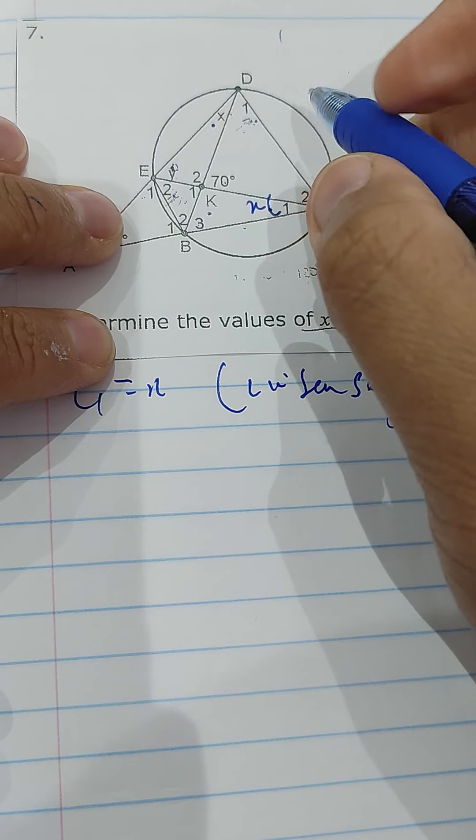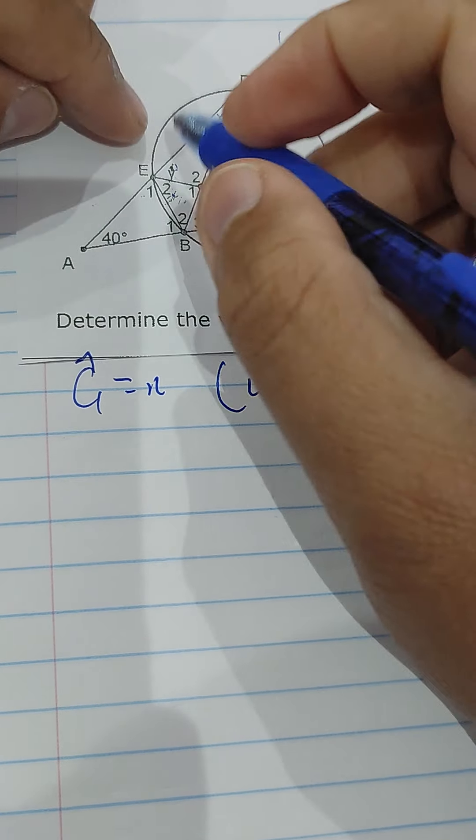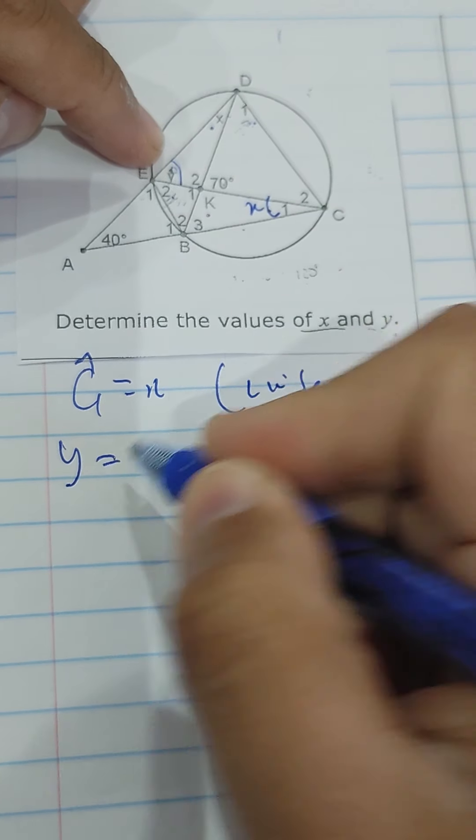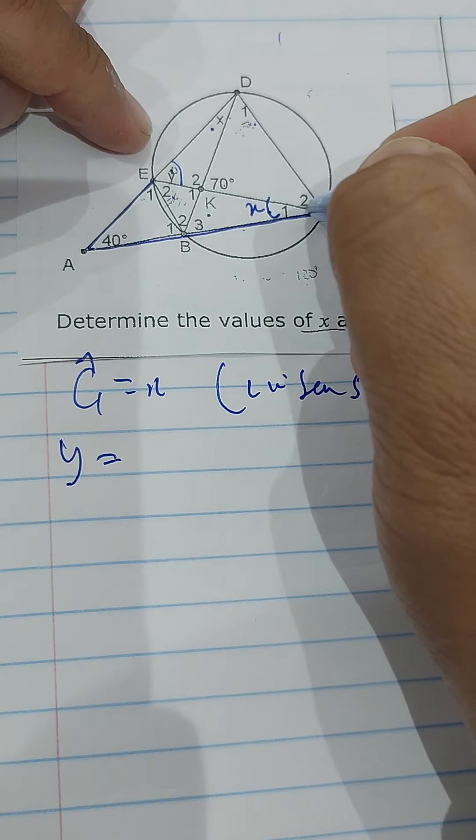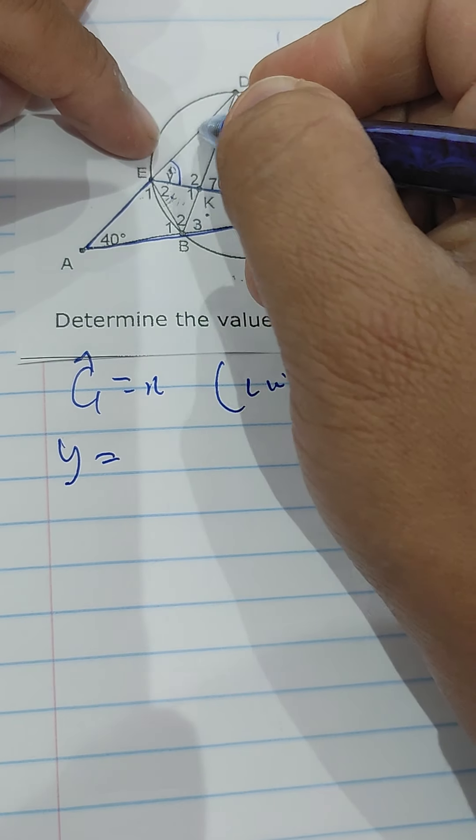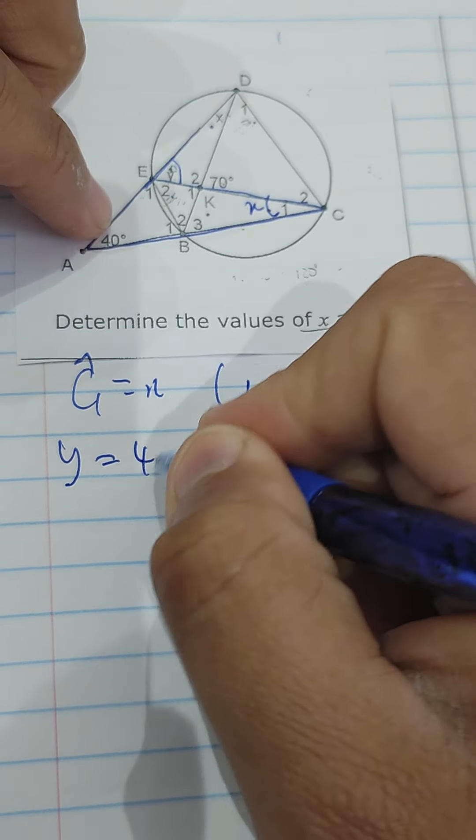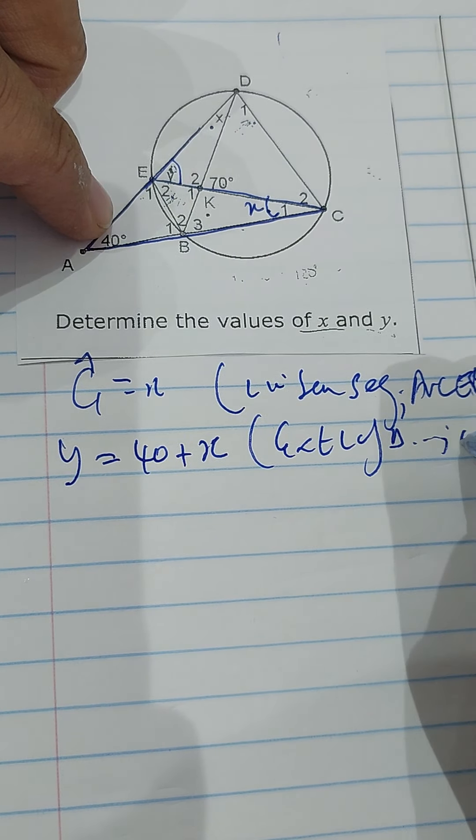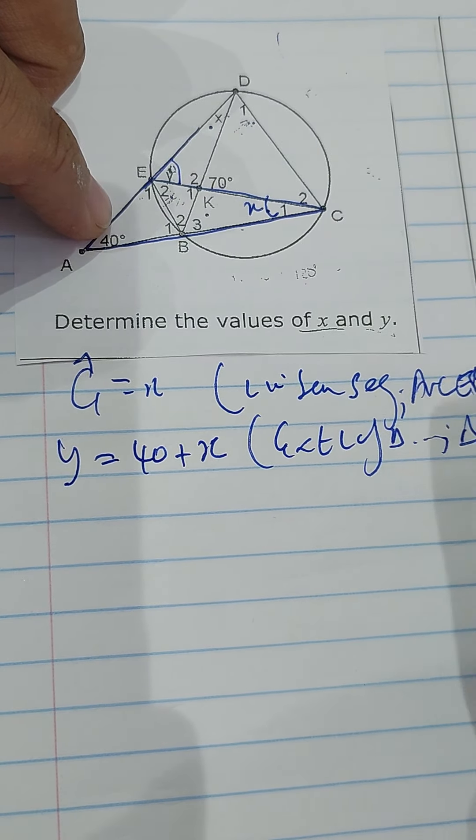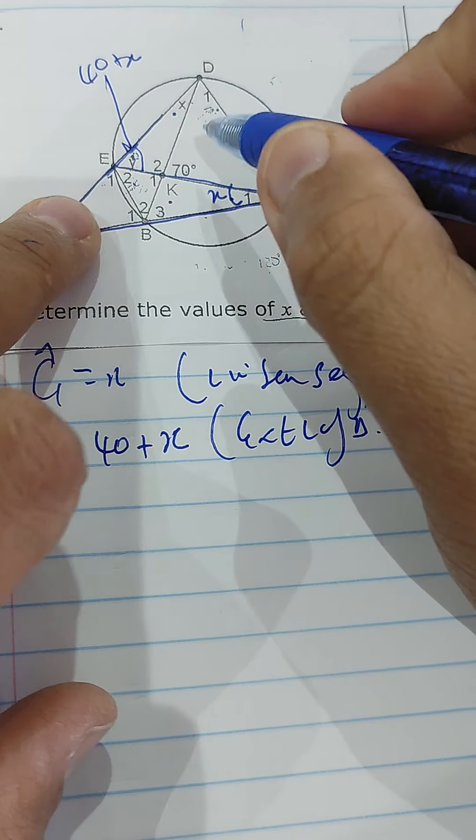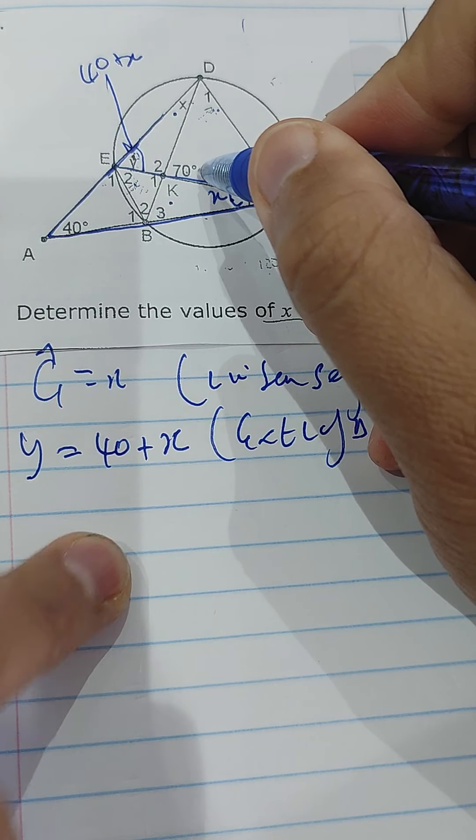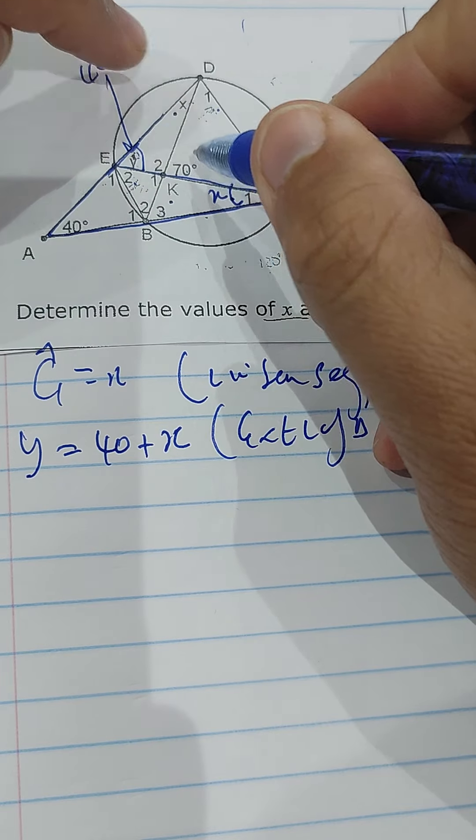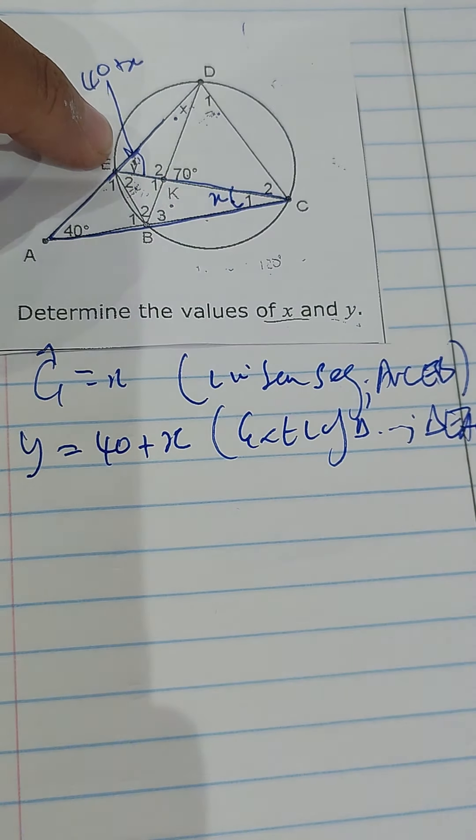So that's an x here. We know that angle y is equal to, y is equal to 40 plus x. That's exterior angle of triangle. Let's call that triangle EAC. So that's going to be 40 plus x. Then this angle here